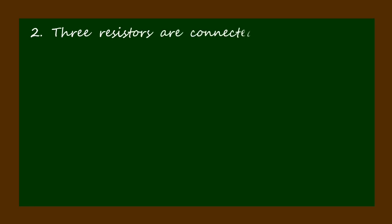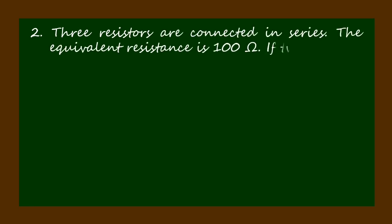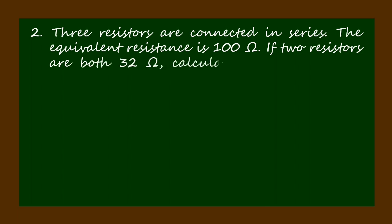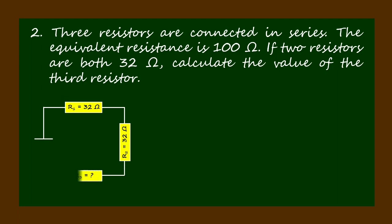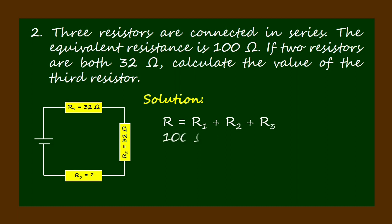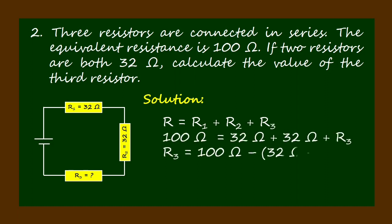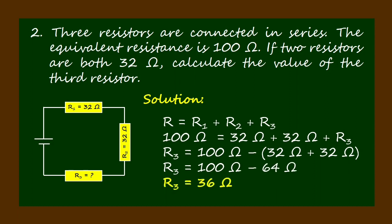Three resistors are connected in series. The equivalent resistance is 100 ohms. If two resistors are both 32 ohms, calculate the value of the third resistor. Let's draw the circuit diagram. Solution: R equals R1 plus R2 plus R3; 100 ohms equals 32 ohms plus 32 ohms plus R3. Then R3 equals 100 ohms minus 64 ohms, therefore R3 is 36 ohms.